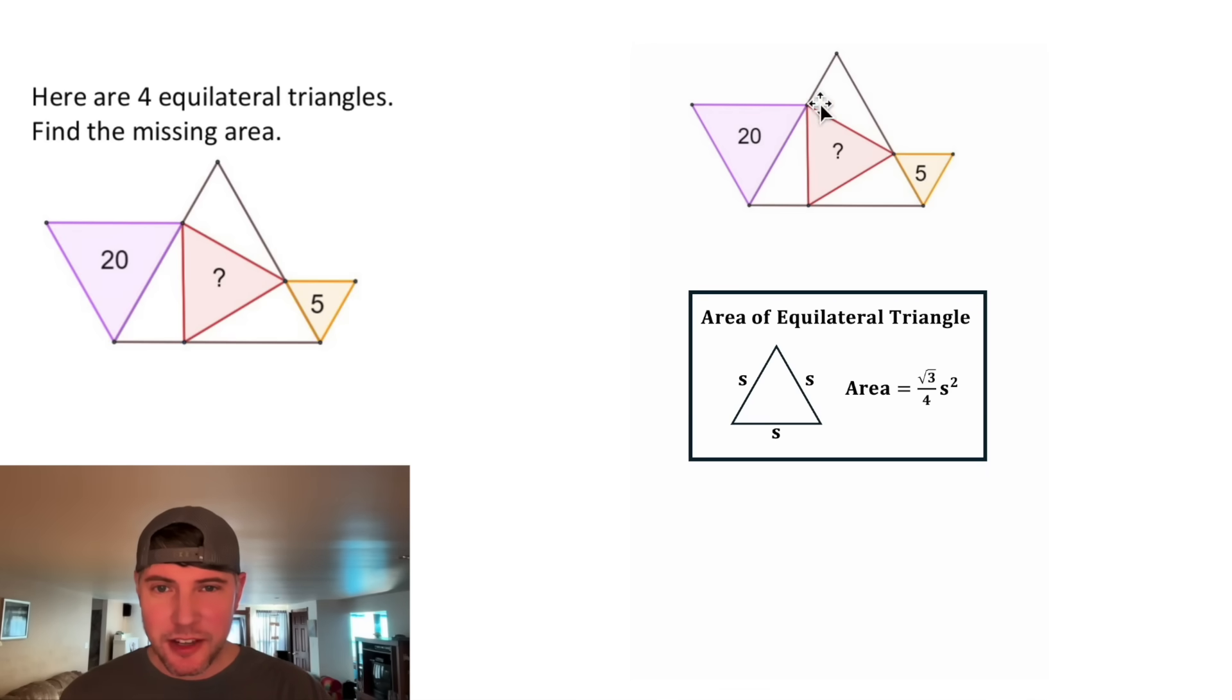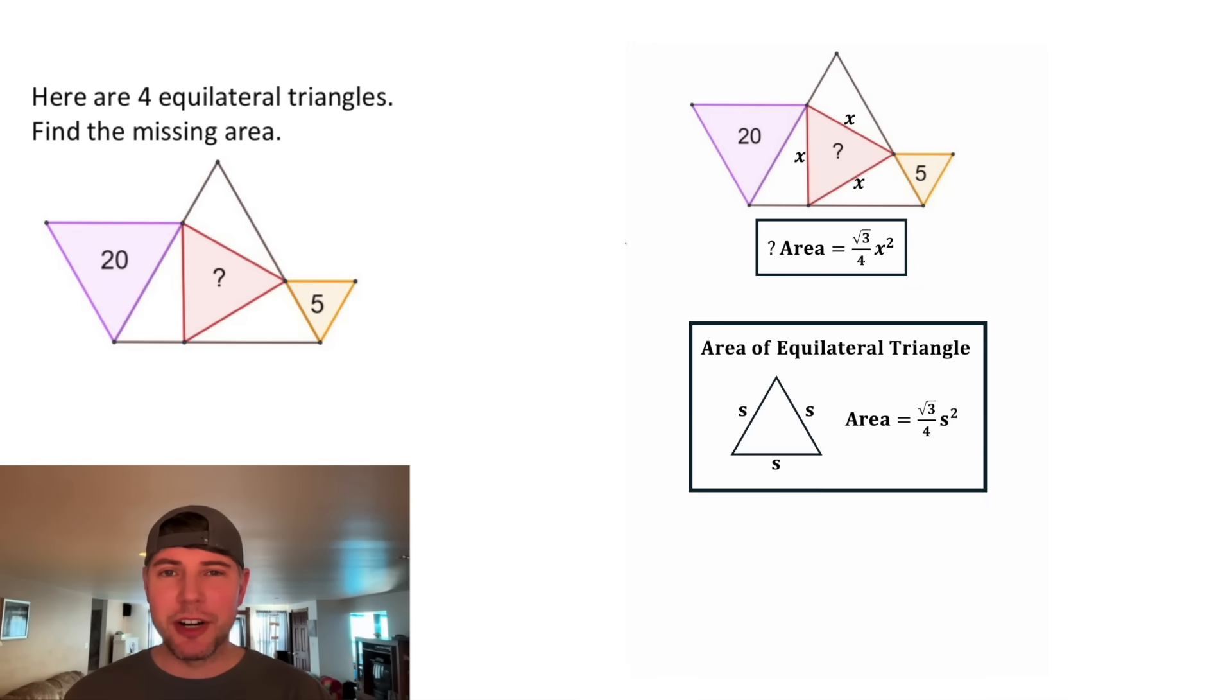If we label the sides of this triangle x, the question mark area is going to equal square root of 3 over 4 times x squared. This looks important. Let's put a box around it. This is what we're trying to solve.